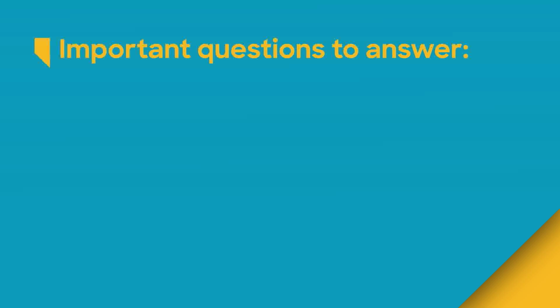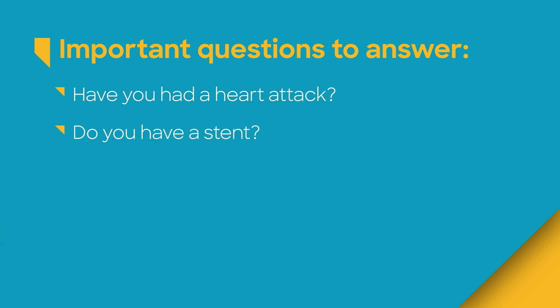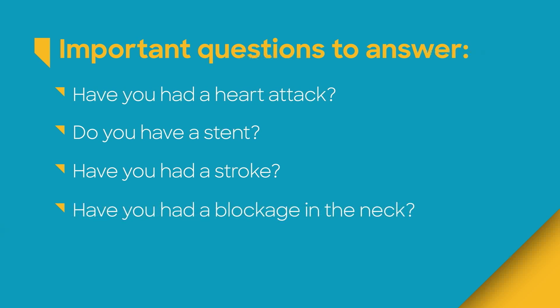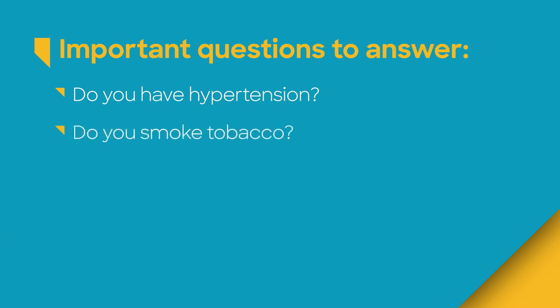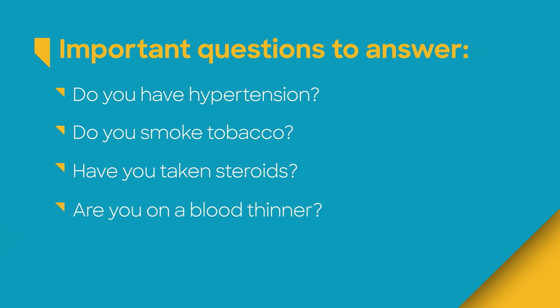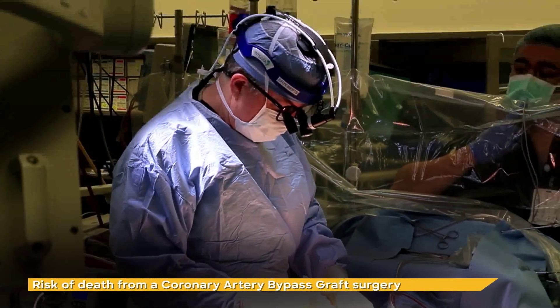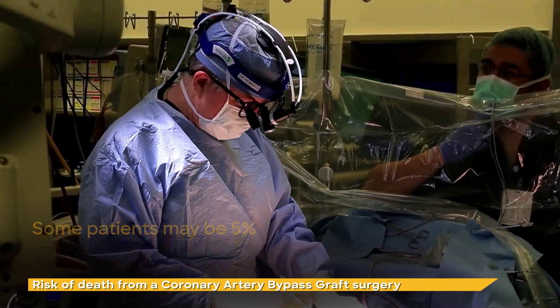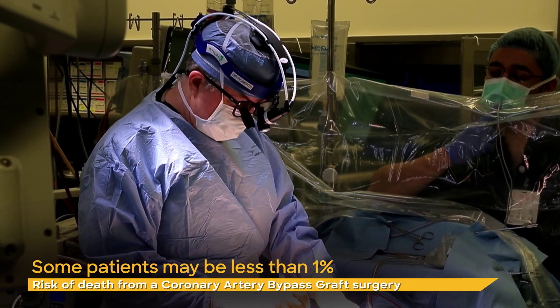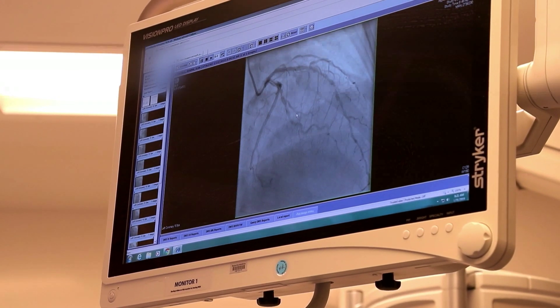When I see a patient, I ask a number of questions: Have you had a heart attack? Do you have stents in the heart? Have you had a stroke? Have you had an operation for blockage in the neck? Do you have diabetes? Do you have hypertension? Do you smoke tobacco — how many years, how many packs? Have you taken steroids? Are you on a blood thinner? By asking these questions, I can formulate a risk, because not every patient poses the same risk in the operation. Some patients may be a 5% risk of death, whereas other patients may be less than 1% risk of death. So it's a very low risk, but it's not zero.